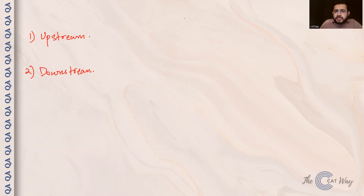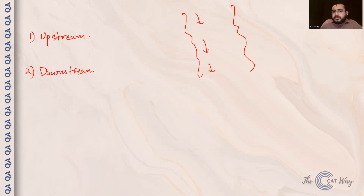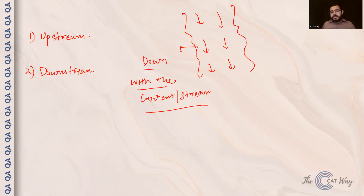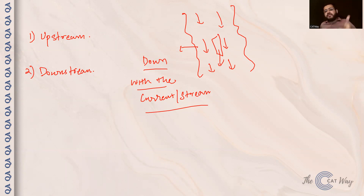A river always flows from top to bottom. So if your boat is going downward — that is, moving in the same direction as the river — that is called downstream, also known as 'with the current' or 'with the stream,' whatever wording the question uses. So downstream means the boat is moving from top to bottom, in the same direction as the water flow.